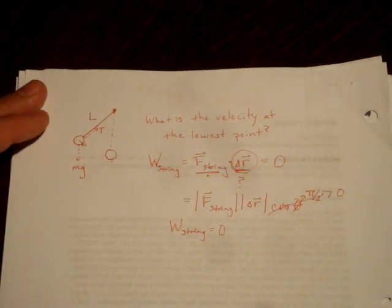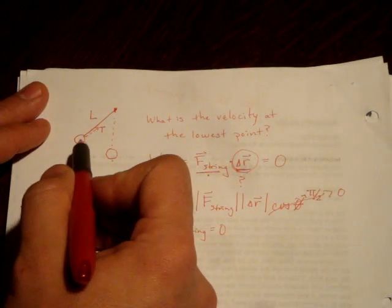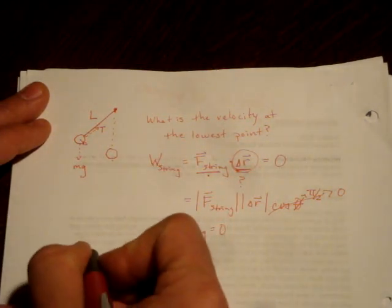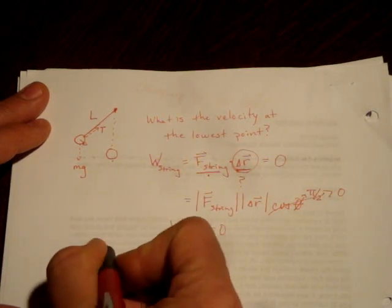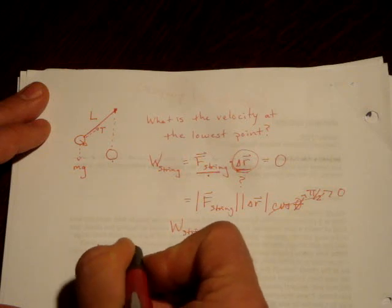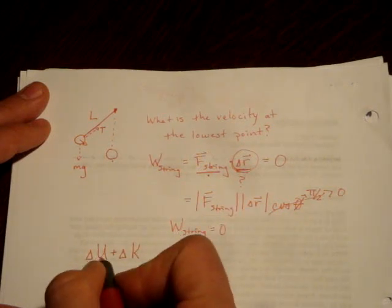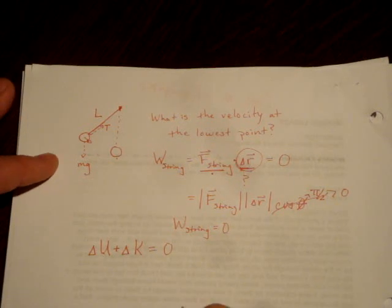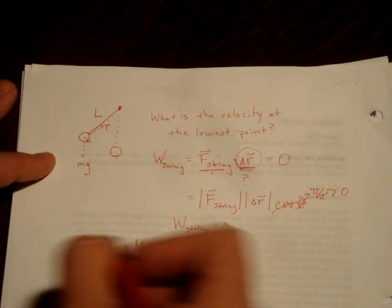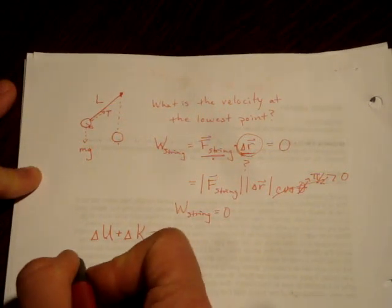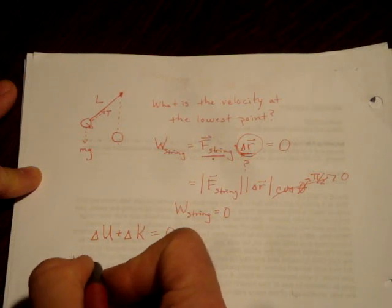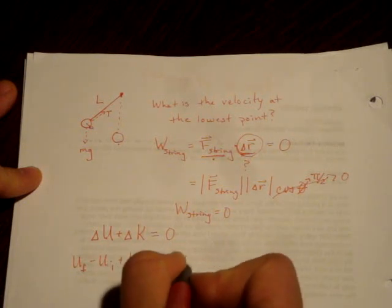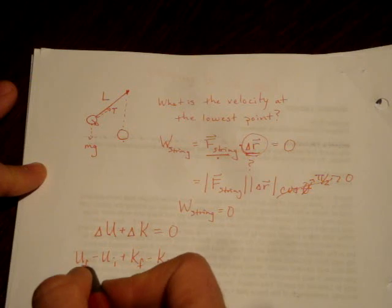The other force acting is gravity, which is a conservative force. So we know that mechanical energy is conserved: the change in potential energy plus the change in kinetic energy equals zero. That expands to: final potential energy minus initial potential energy, plus final kinetic energy minus initial kinetic energy, equals zero.